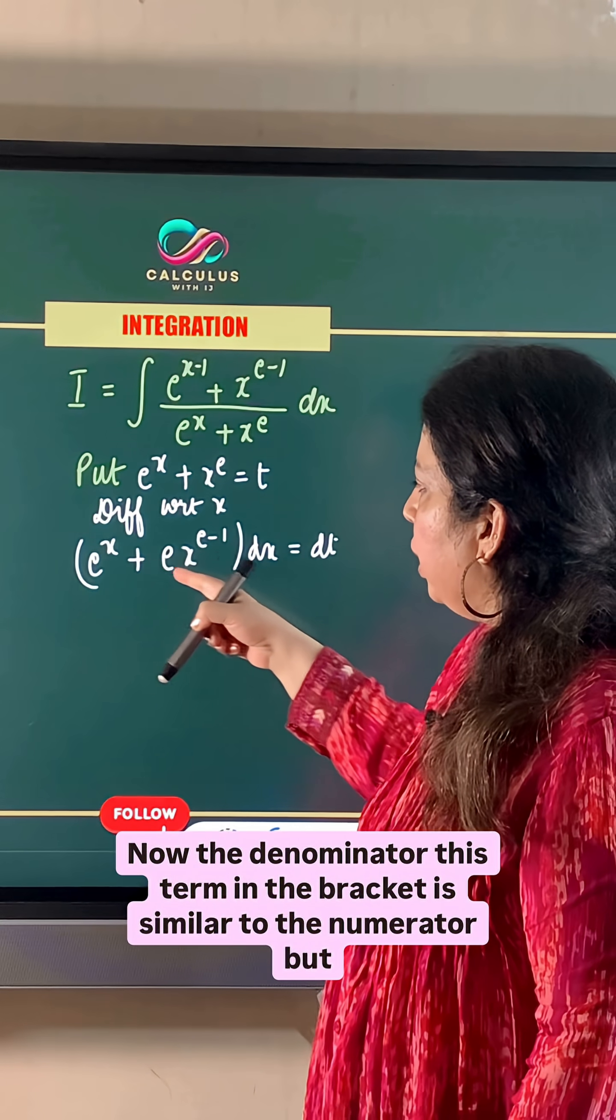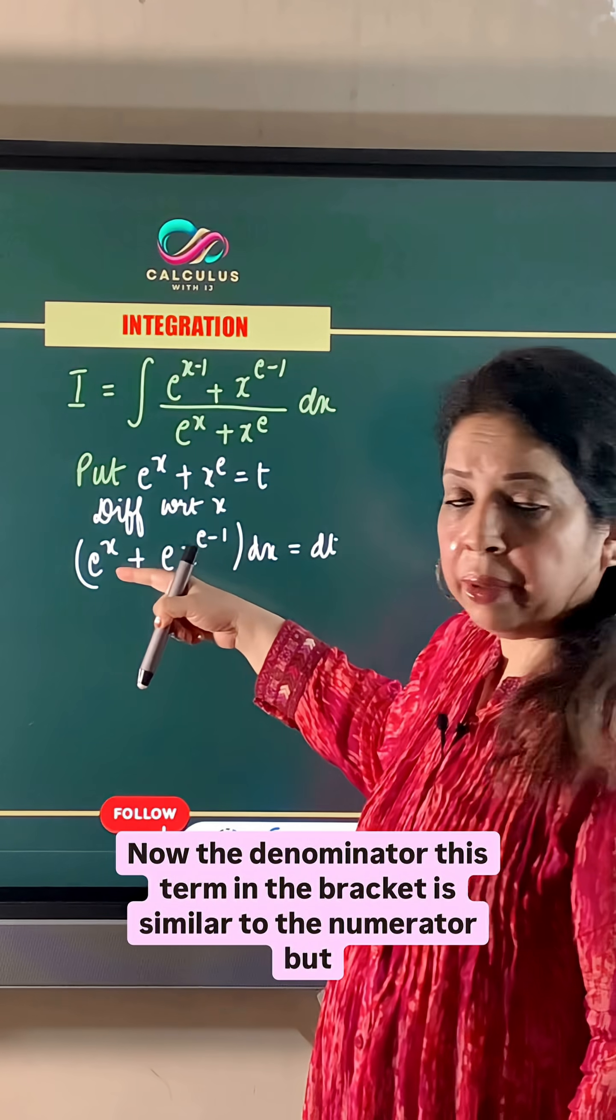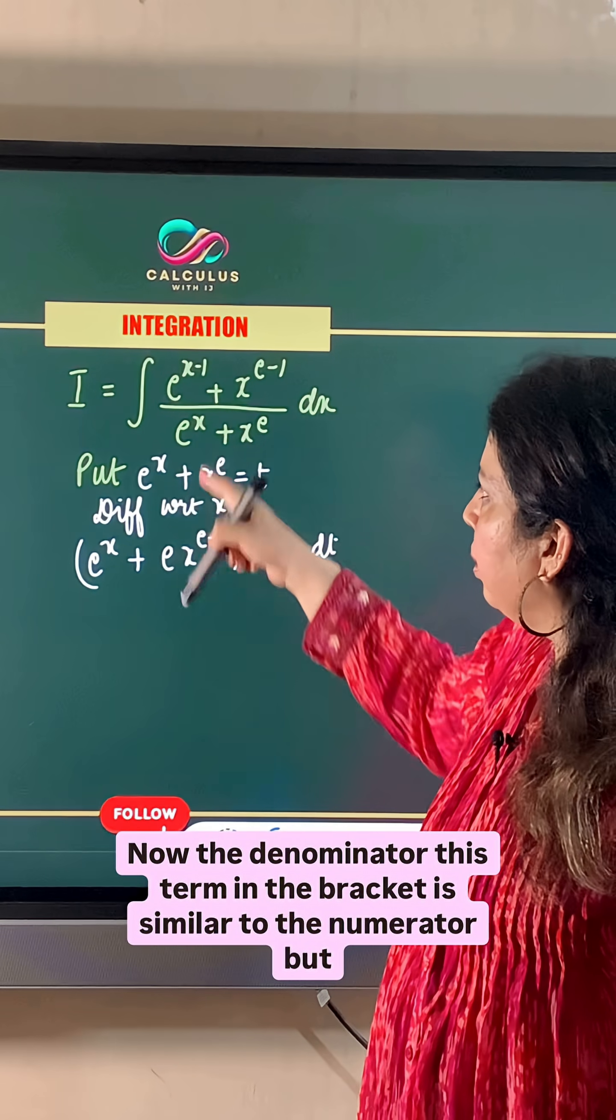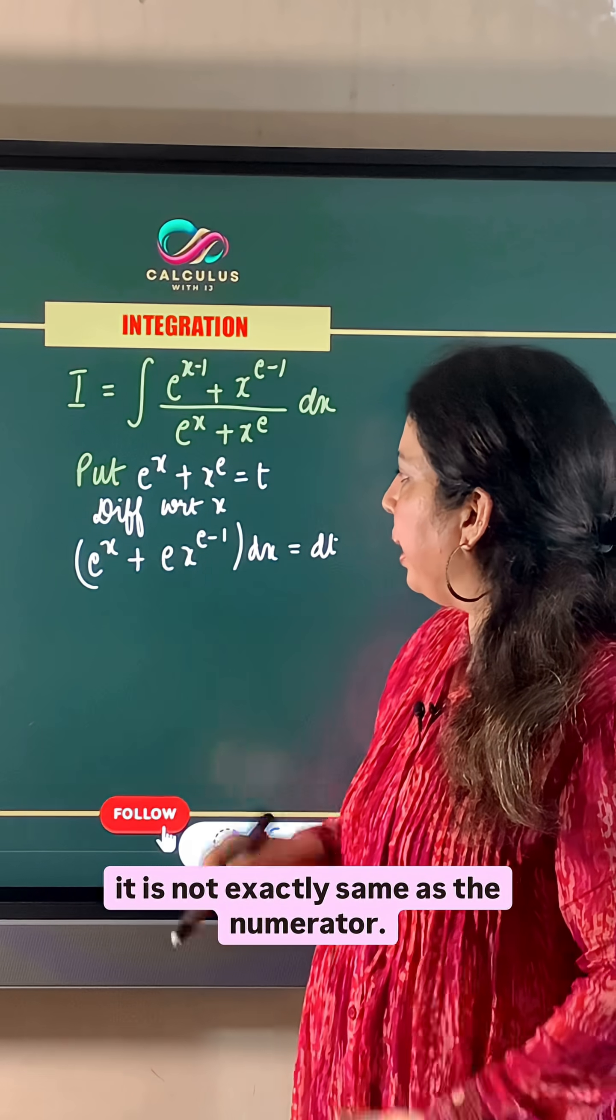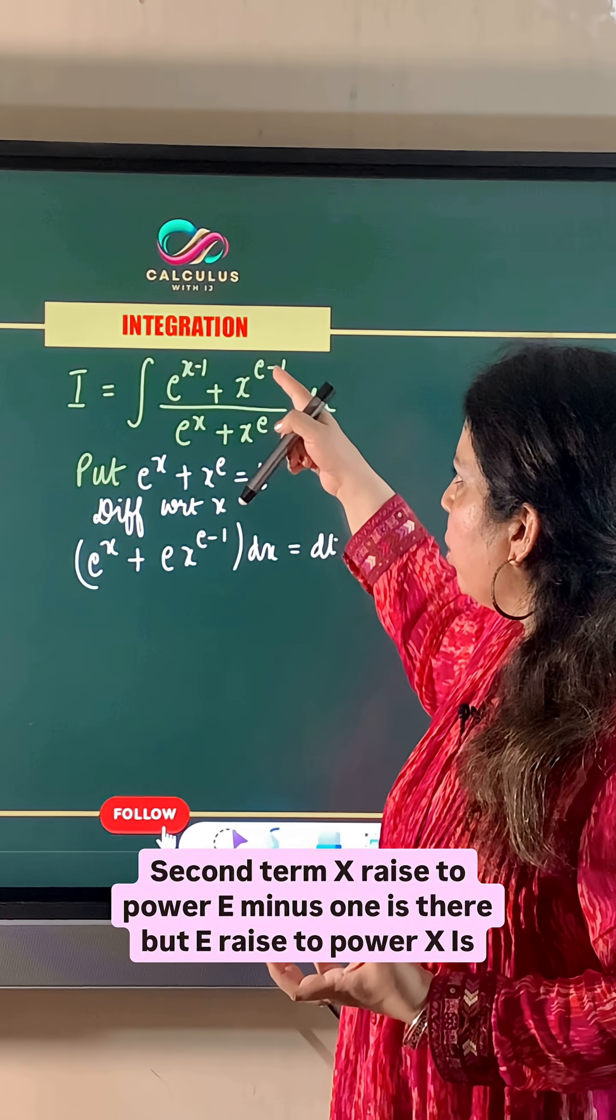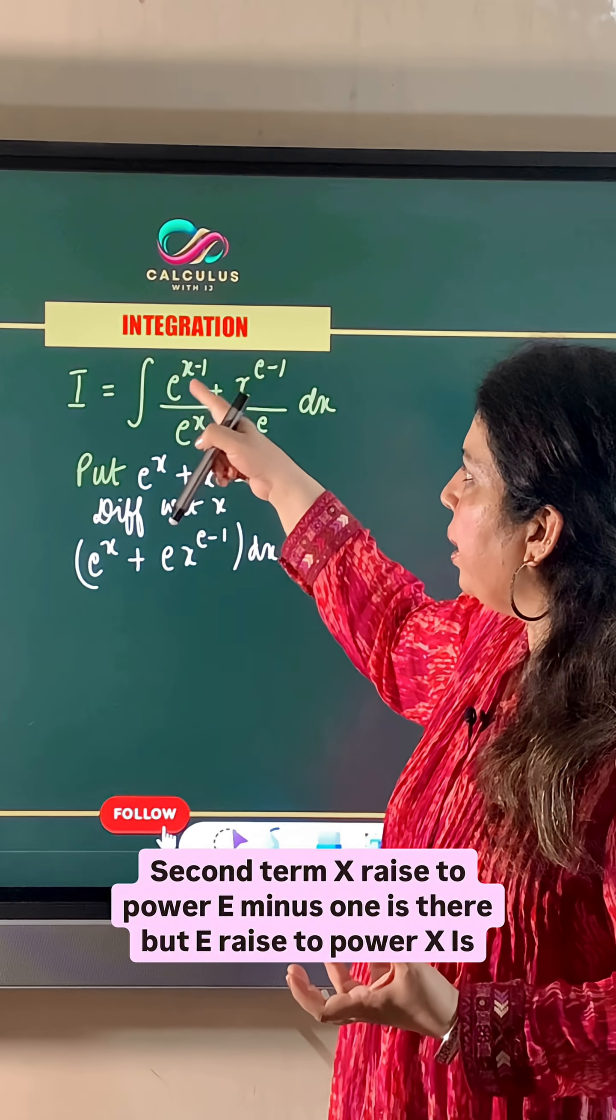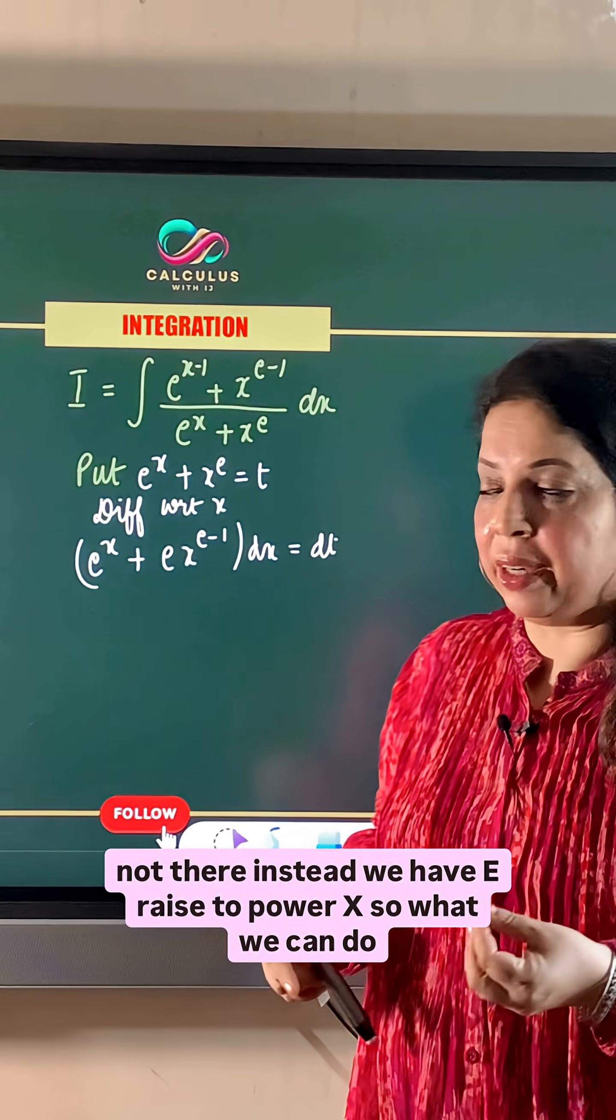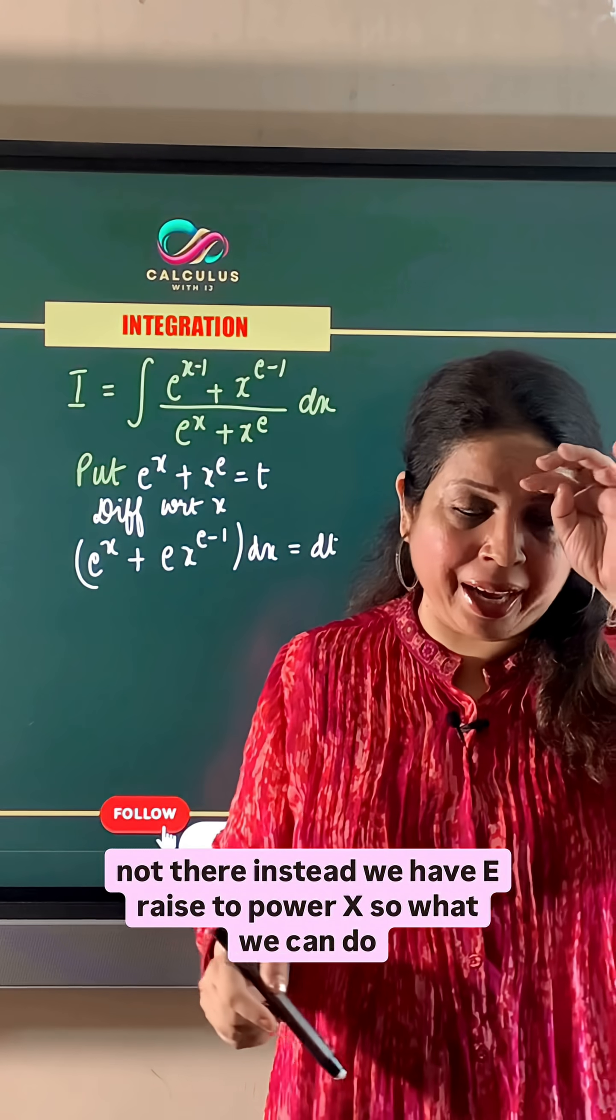Now the term in the bracket is similar to the numerator but it is not exactly the same as the numerator. The second term x raised to power e minus 1 is there, but e raised to power x minus 1 is not there. Instead we have e raised to power x.